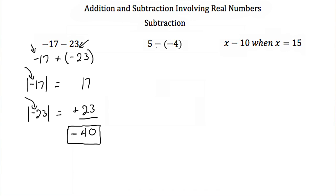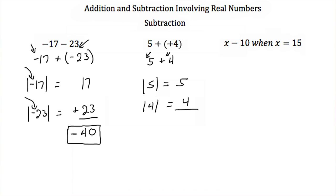Our next example is 5 minus a negative 4. Subtraction is the same as addition — just switch the sign — so this becomes 5 plus 4. We have two numbers with the same sign, so we add their absolute values: the absolute value of 5 is 5 and the absolute value of 4 is 4, giving us 9. Both come from positive values, so this is positive 9.